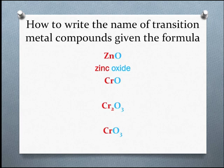What about the next one, CrO? CrO is chromium(II) oxide because oxygen forms a negative 2 ion.